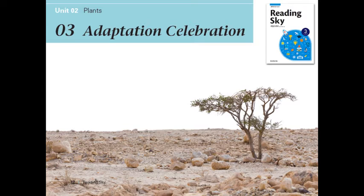Plants are found in many different environments all over the world. They grow in hot, dry deserts and cold, wet forests. Plants live on mountain cliffs and in low, green valleys. Some plants even survive underwater.